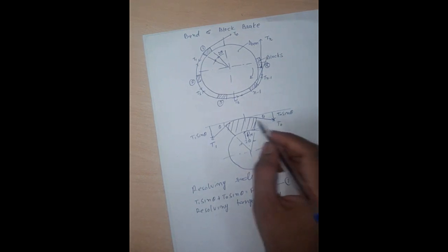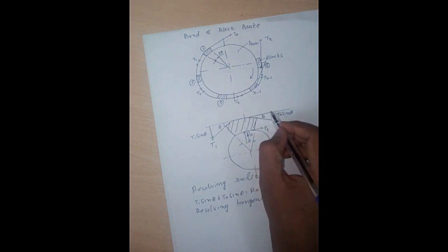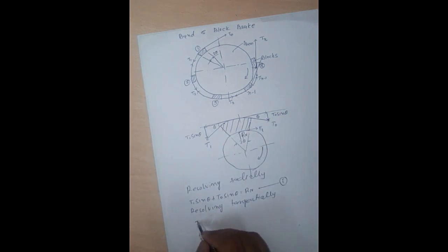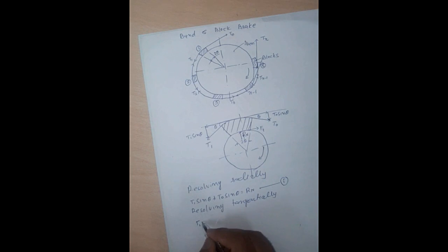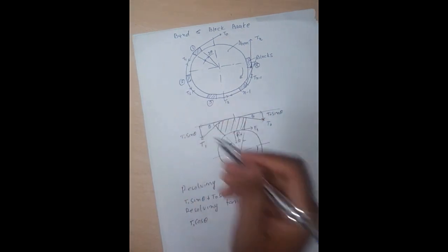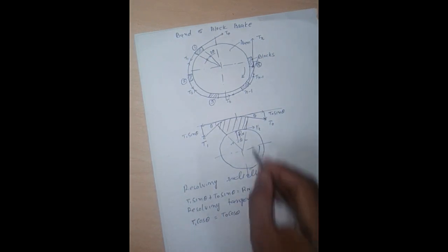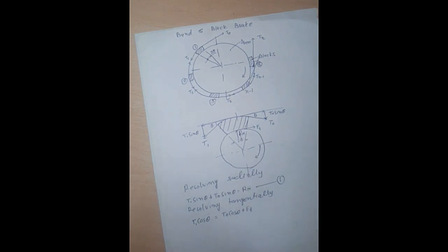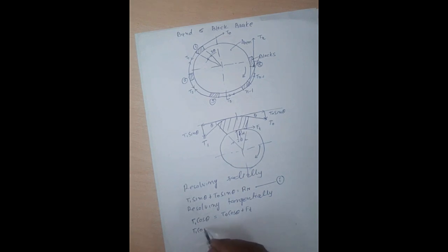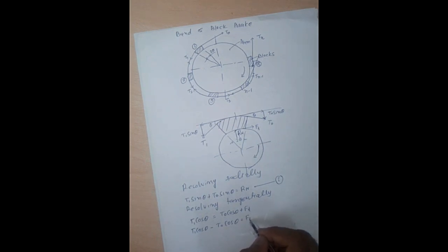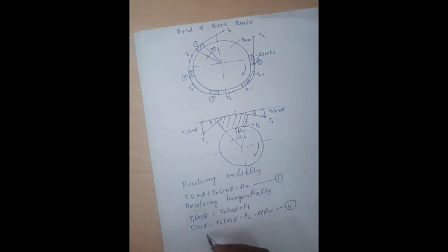Resolving tangentially (horizontally), the cosine components give T1 cosθ = T0 cosθ + Ft. Rearranging: T1 cosθ − T0 cosθ = Ft. Since Ft = μRn, we can write T1 cosθ − T0 cosθ = μRn. This is Equation 2.